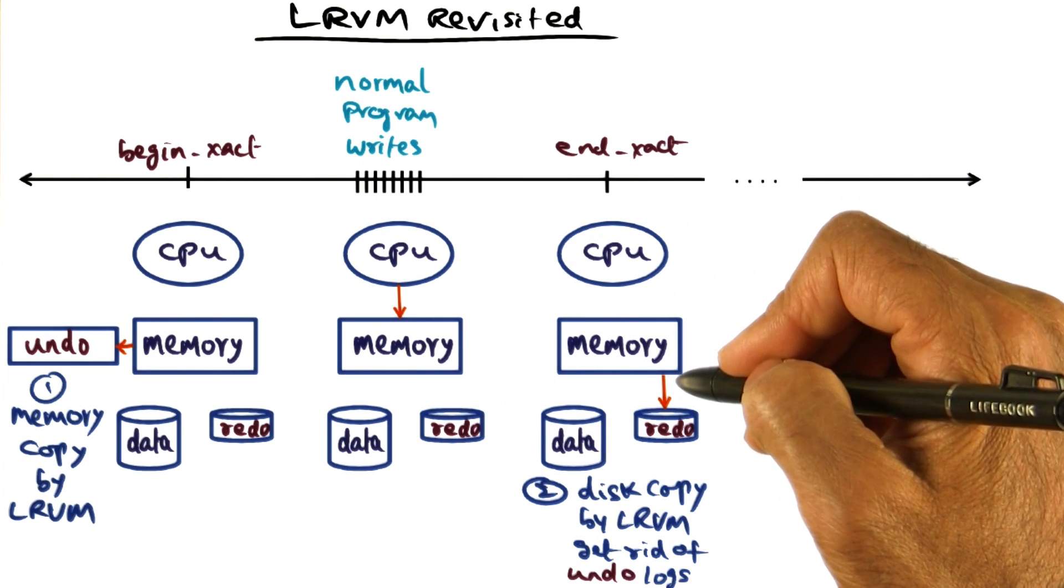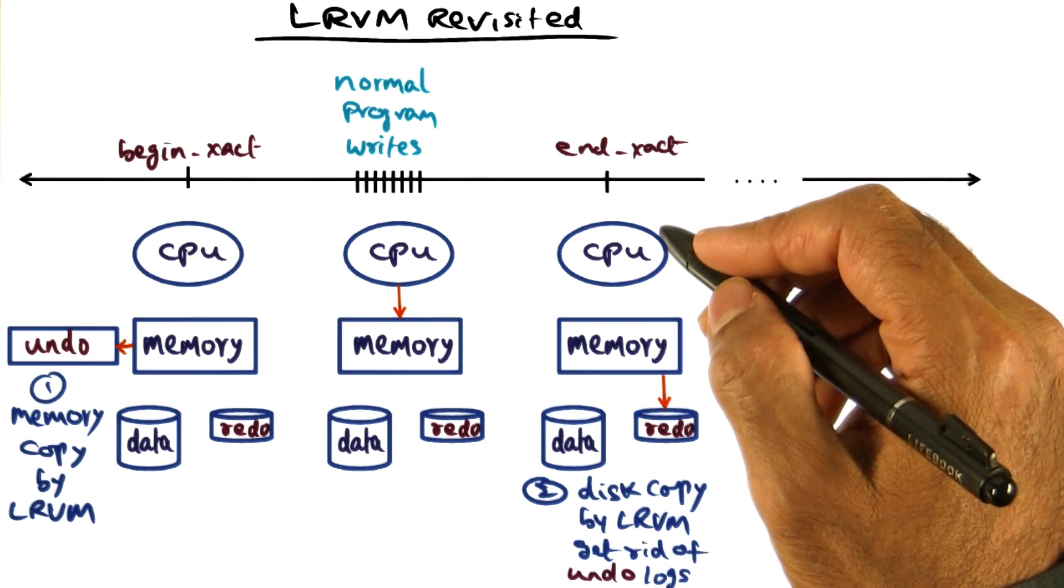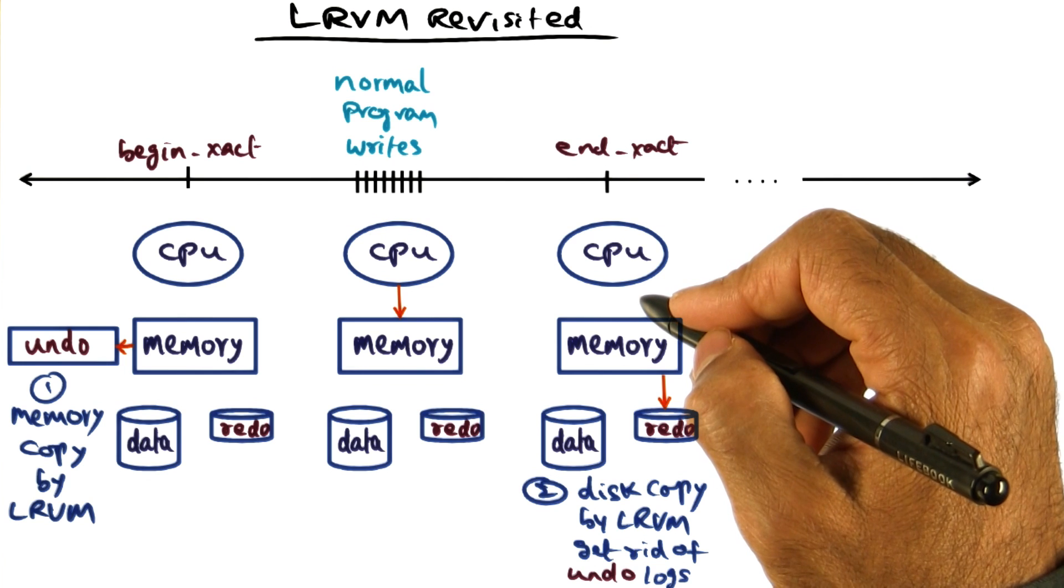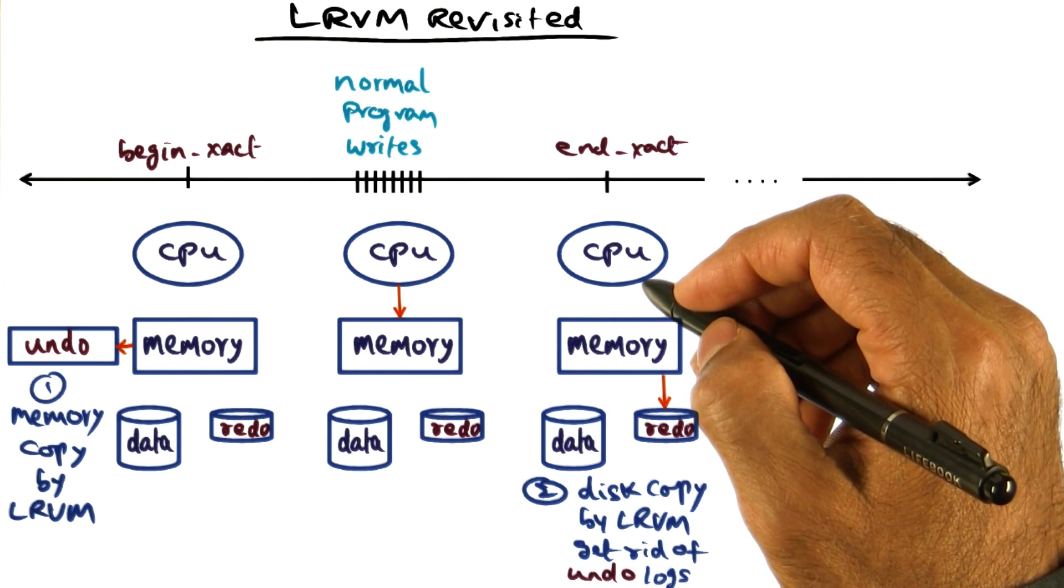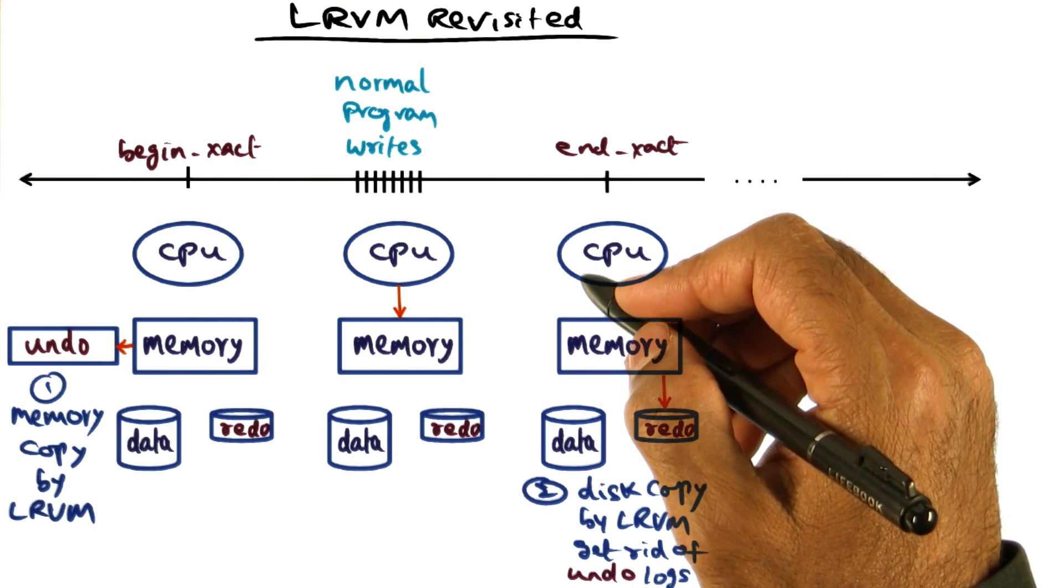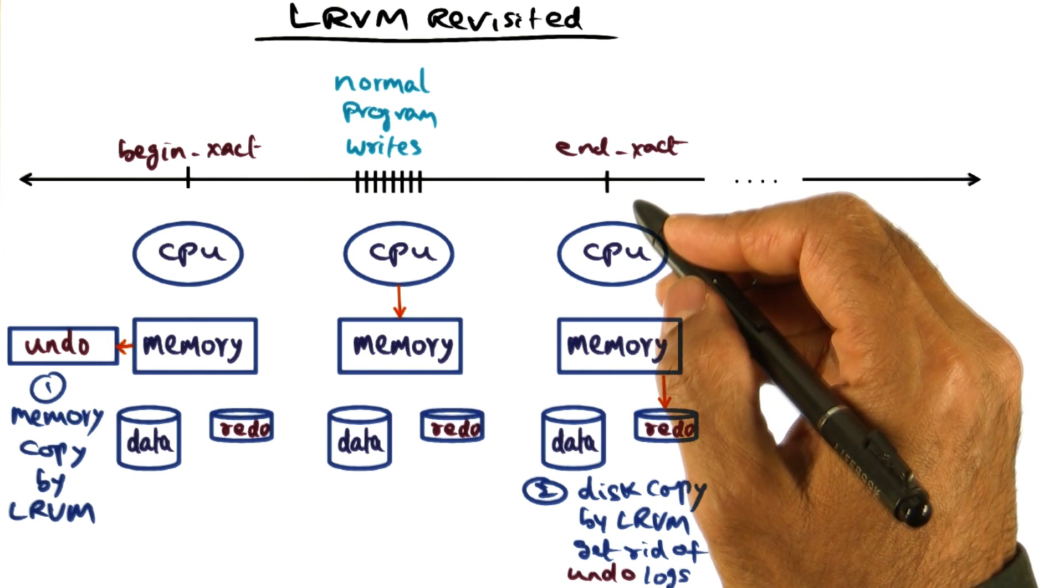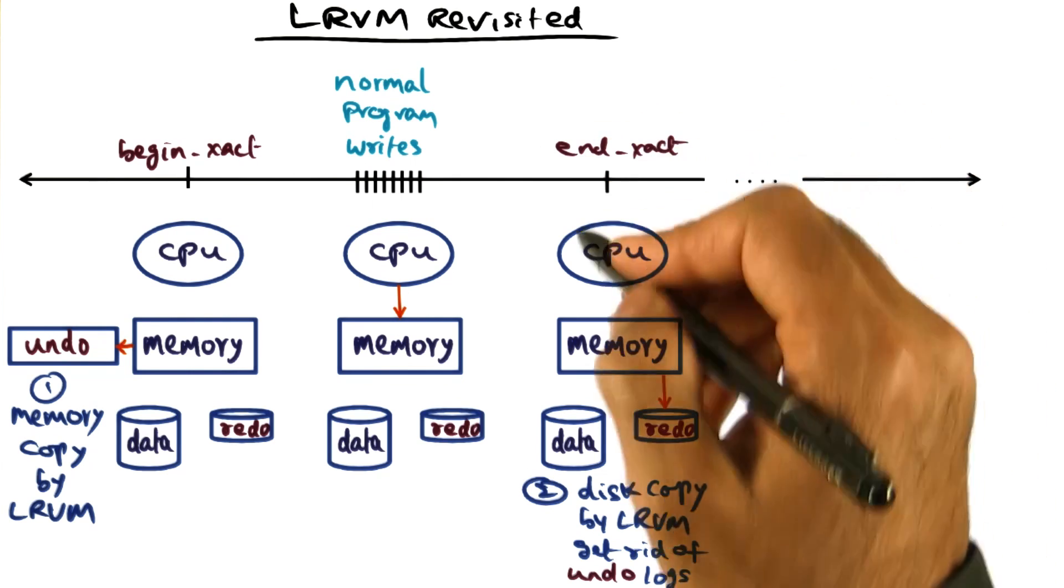And this is what we called as the window of vulnerability when we talked about LRVM. So what the no flush option does is to increase the vulnerability of the system to power failures in favor of performance. And that's a calculated risk an application developer is taking if they specify no flush optimization in the end transaction.